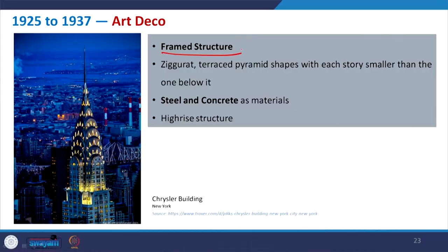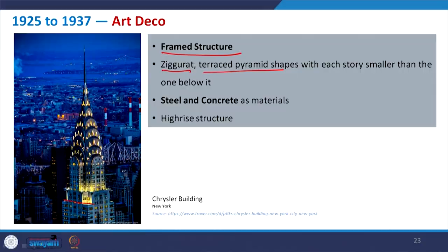The Art Deco movement introduces frame structure fully. A ziggurat or terrace pyramid shape is made in this case, and steel and concrete are used as materials to give form. High-rise office, residential, and hotel buildings were the need. Overall it gives a nice aesthetic look, but from a structural point of view it has moved from a typical structure to the frame structure at this moment.